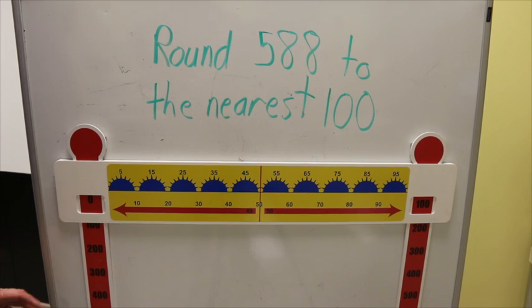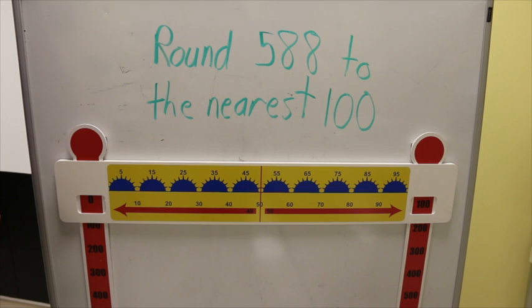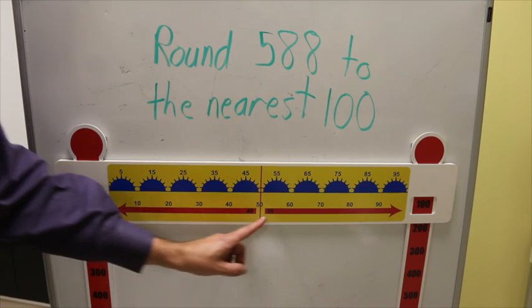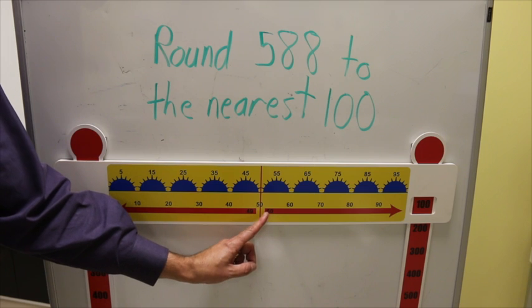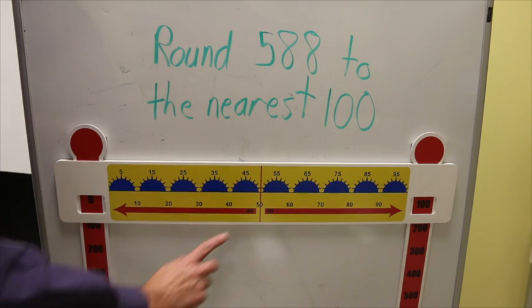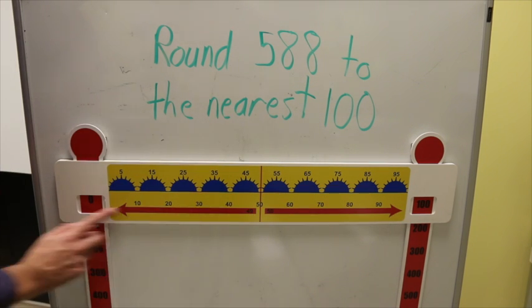The first manipulative that we're going to do today is with my 100X math manipulative. A few features to notice before we get started. There's a line in the middle so that students can tell which way to go when they round numbers. There's an arrow that tells going 50 or more this way or 49 or less going this way.